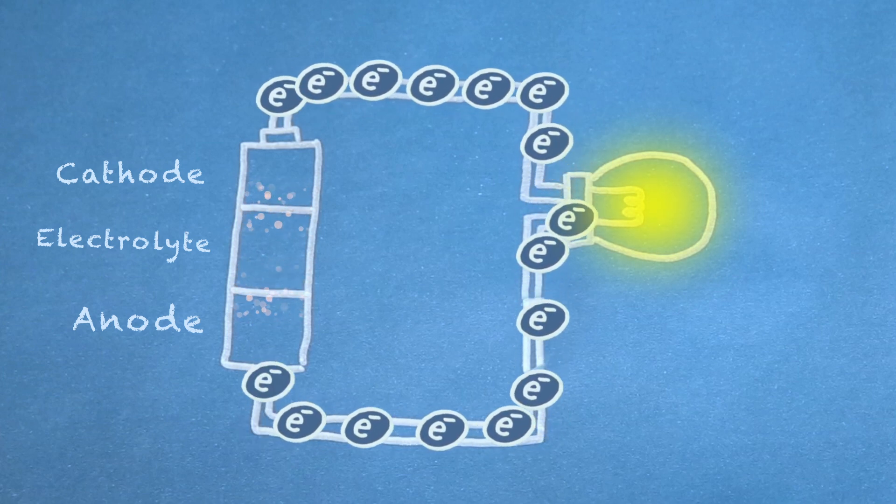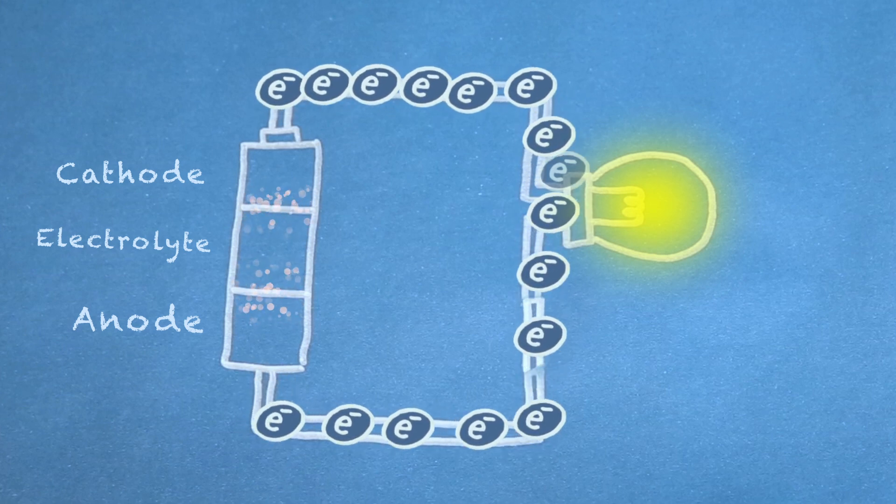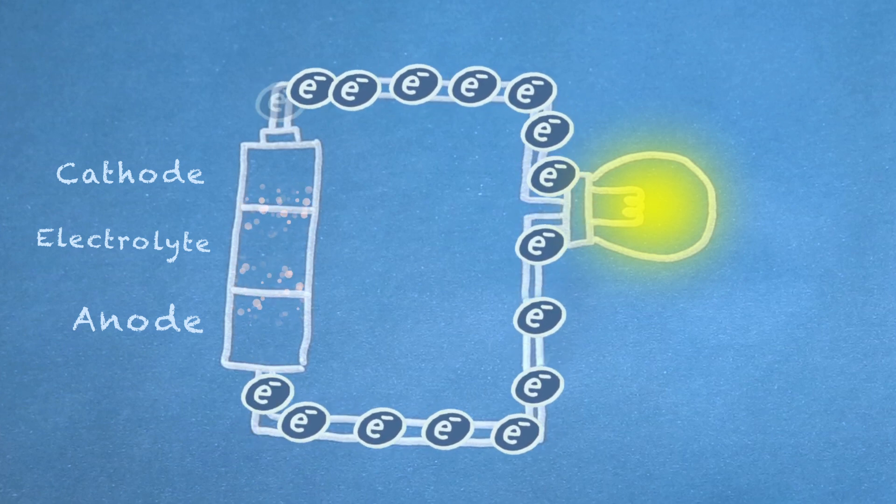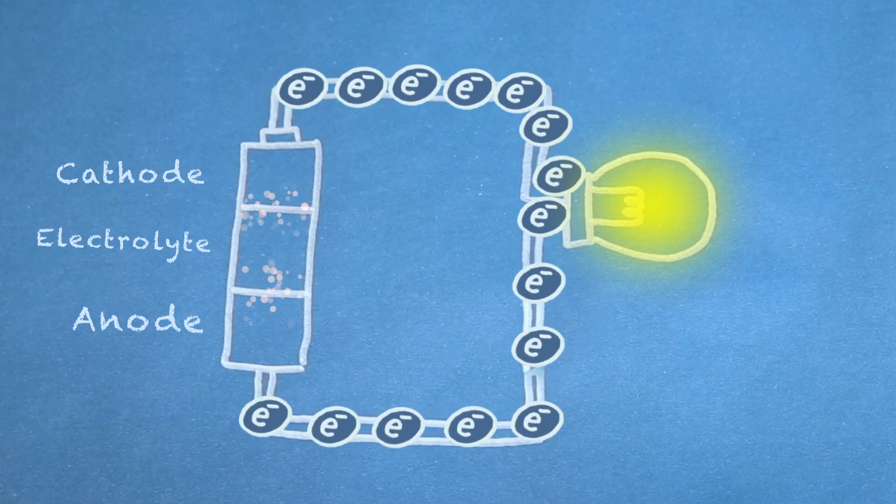The electrolyte makes it very difficult for the electrons to move from the anode to the cathode. But we can help them out by providing an electrically conductive circuit between the anode and the cathode.